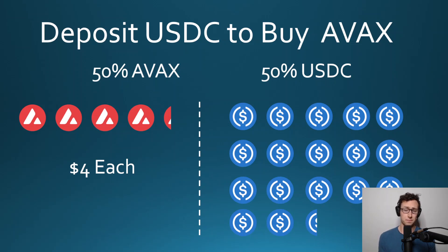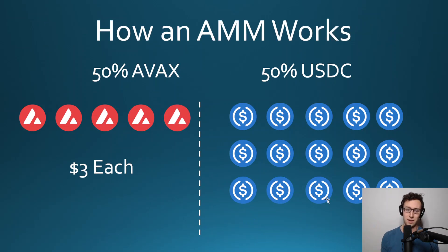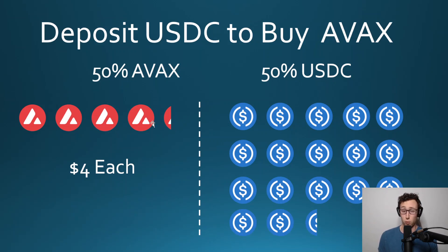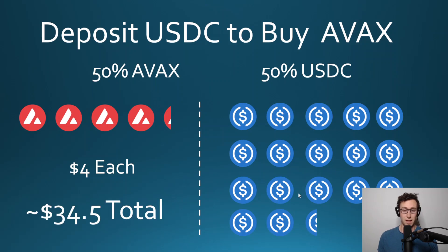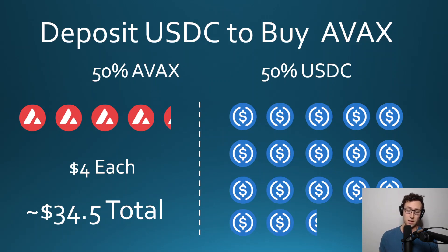So what is impermanent loss? Officiating the trades are the people who provided liquidity — us, the farmers, the people who do DeFi and have our tokens in the pool. We started off putting the initial five AVAX and 15 USDC into the pool. Eventually we get to a point where you have roughly 4.3 AVAX at $4 each and 17.2 USDC still at $1 each. If you do the math on how much your total position is now worth, excluding any fees received, it would be roughly $34.50. It did increase, because you have more USDC and each AVAX is now worth more, but you also have less AVAX.